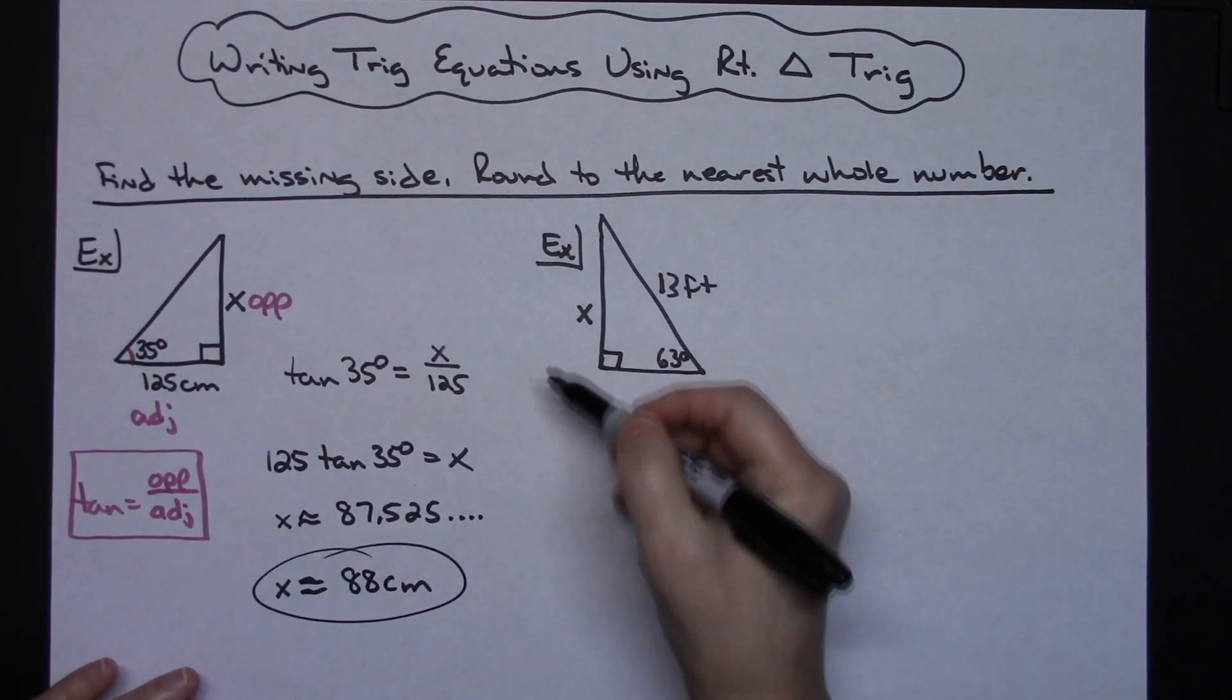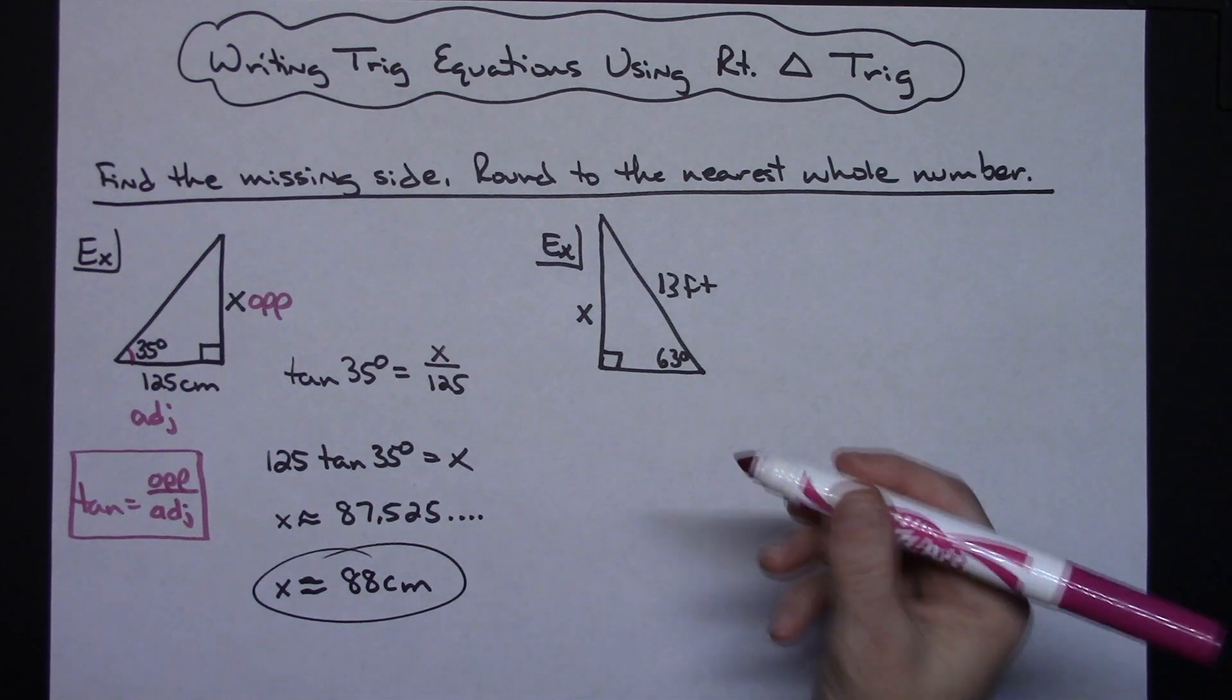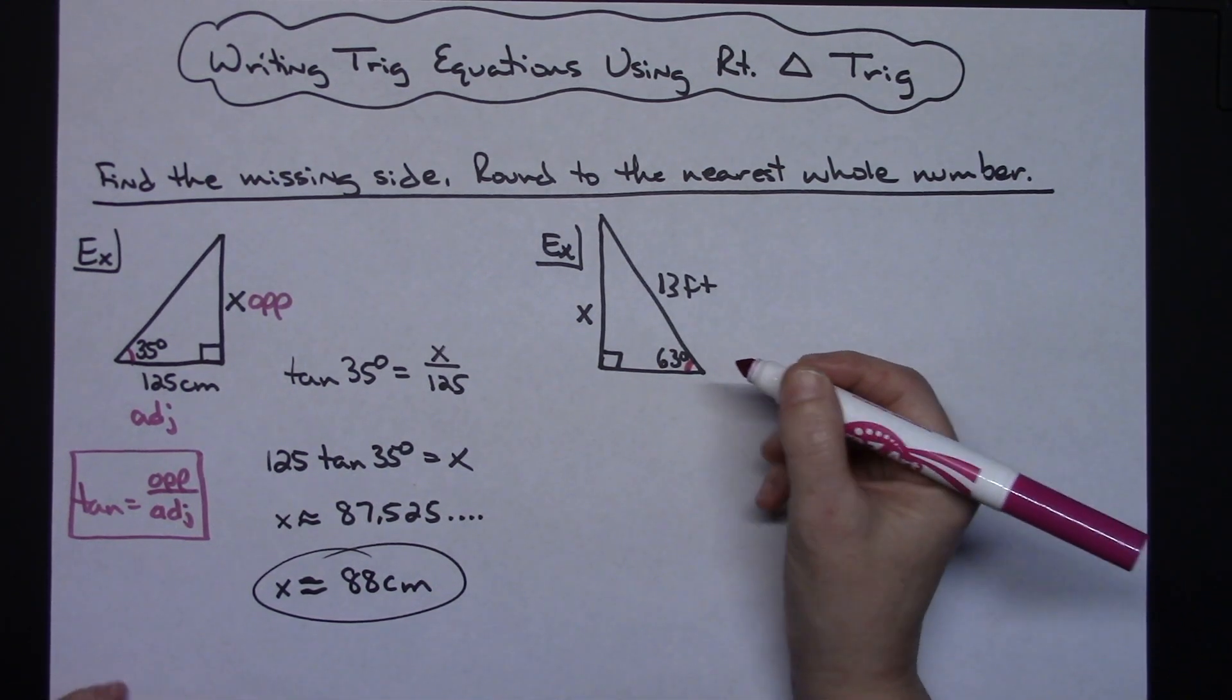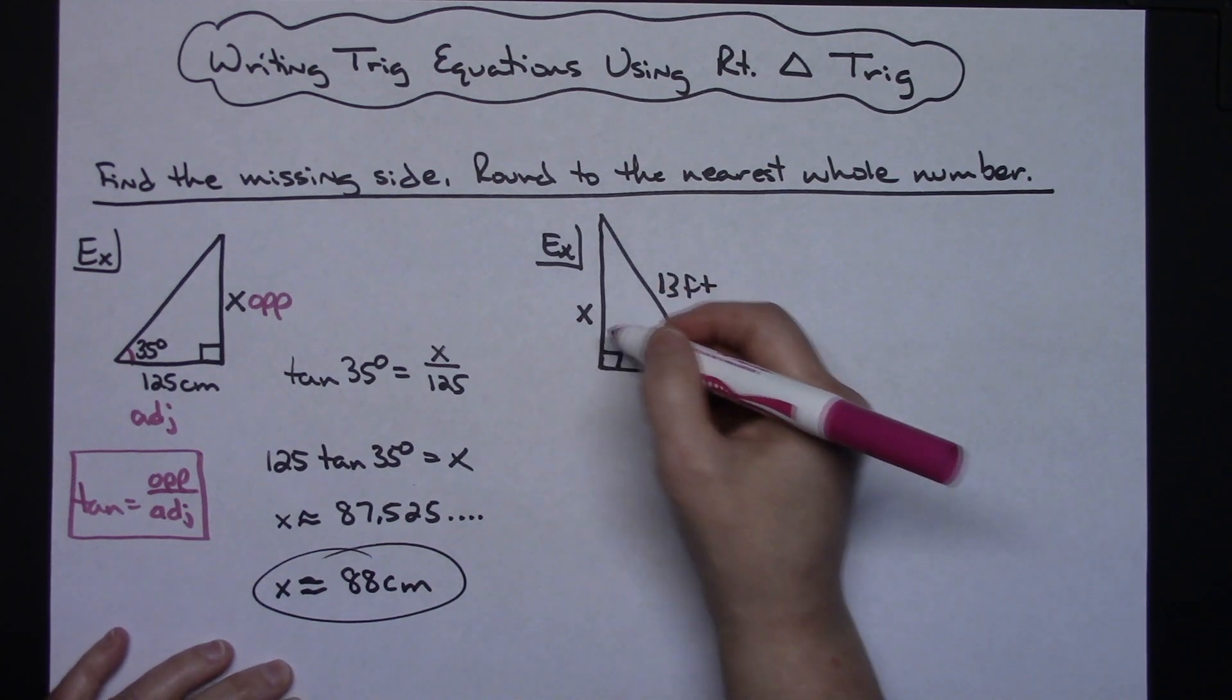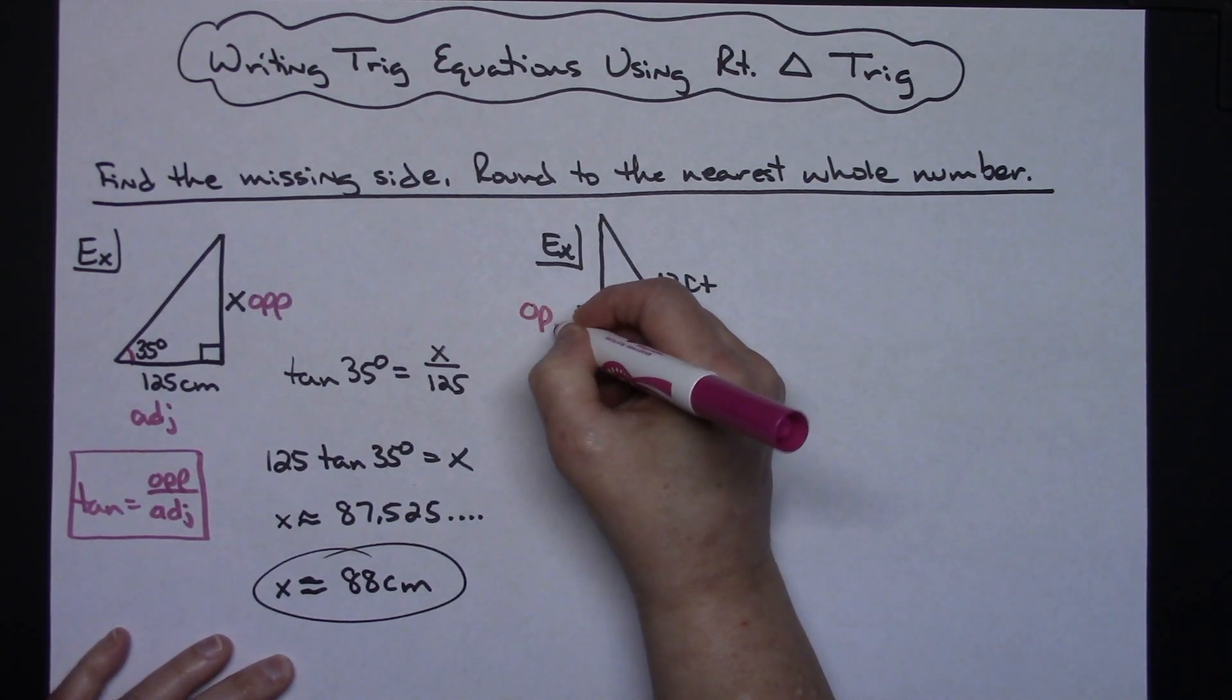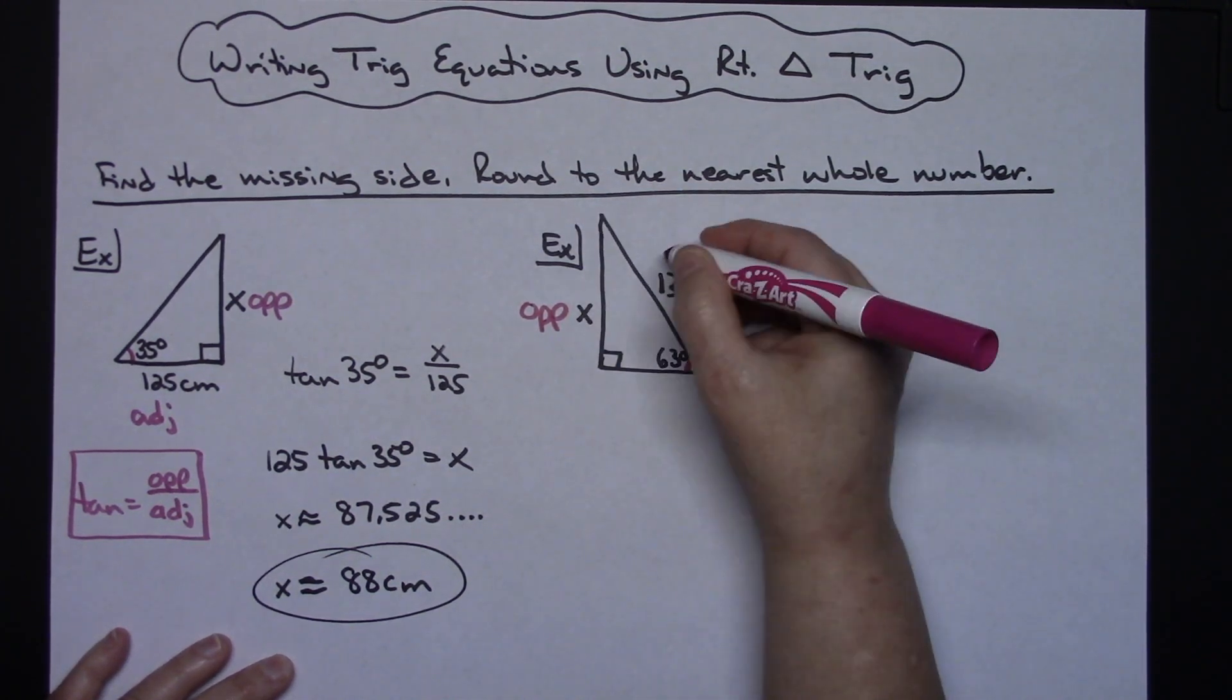Now we're going to do another one. Given a different sized triangle rotated around, my reference angle is in a different spot. My reference angle is 63 degrees down here, so that X side is the opposite side of the reference angle, but this 13 is the hypotenuse.